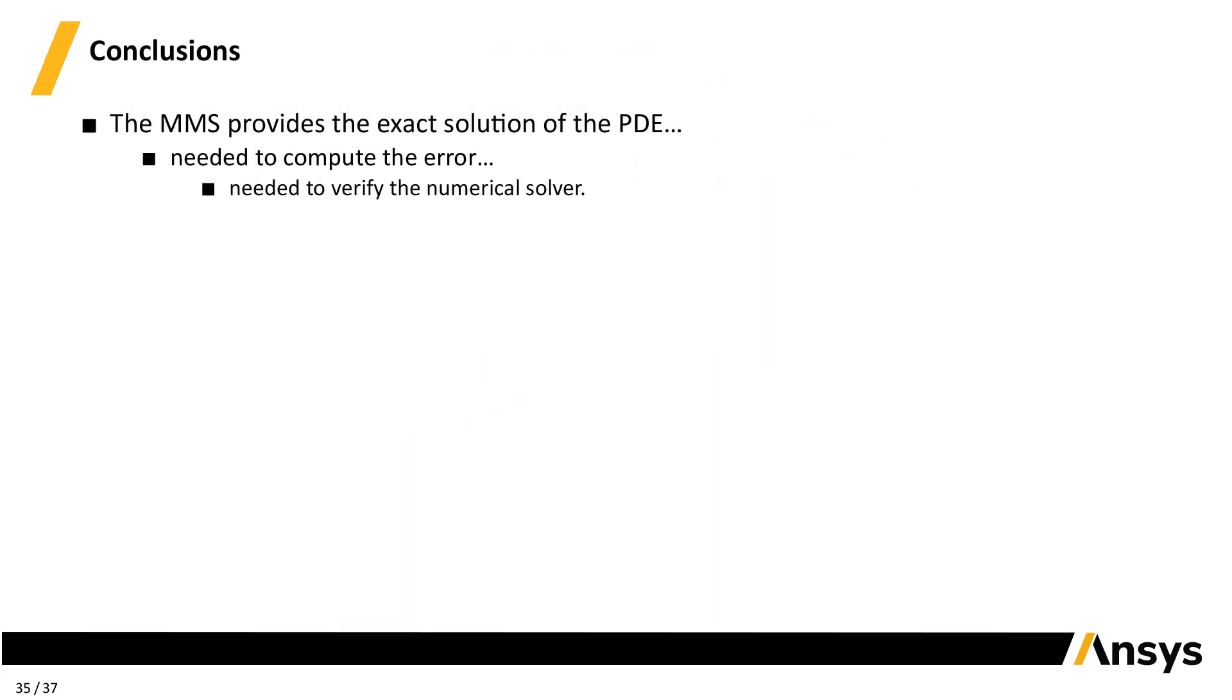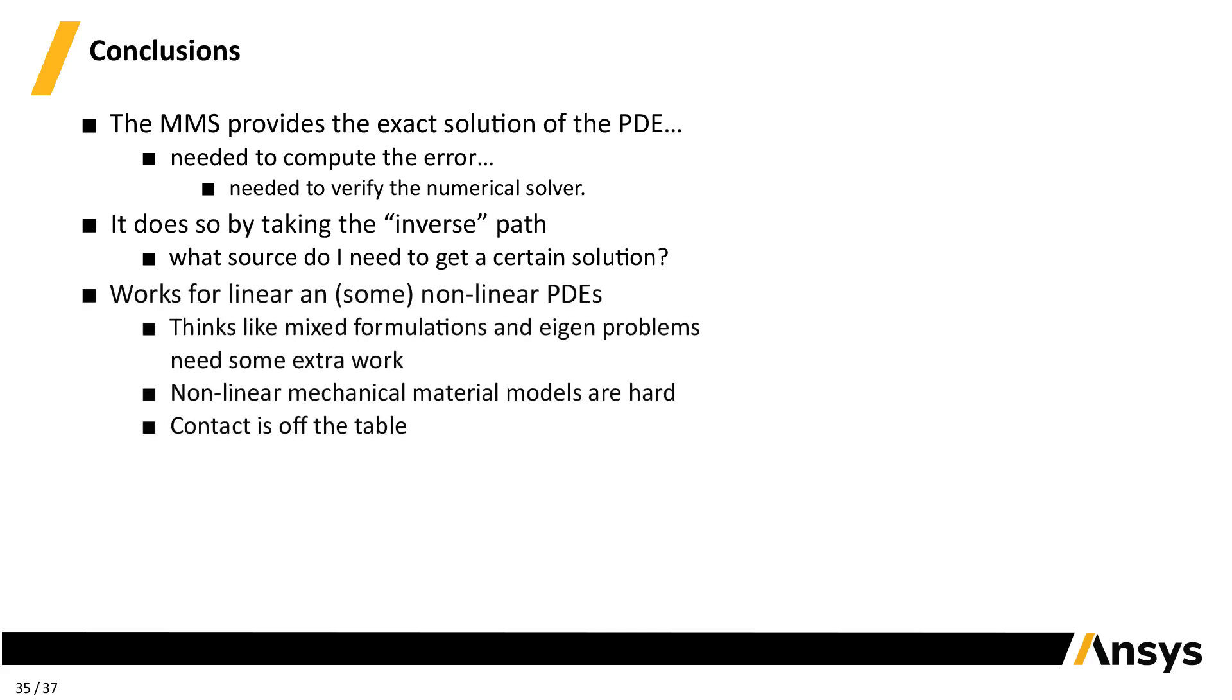The method of manufactured solutions provides the exact solution we need to compute the error when we decide to embark on the task of verifying our solver. And it does so by going backwards and asking, what is the source needed to get a certain solution? As we showed, it works for both linear and non-linear problems, although complexities do arise. For instance, mixed formulations need separate convergence studies for each field, and eigenproblems like modal analysis need some extra care. Also, coming up with sources involving non-linear mechanical problems might complicate the mathematics a lot. And for instance, contact is off the table as far as MMS is concerned.